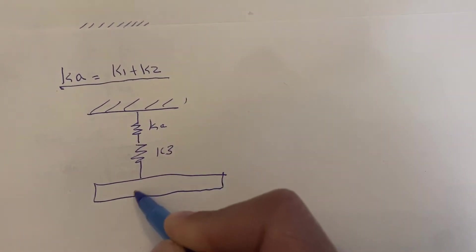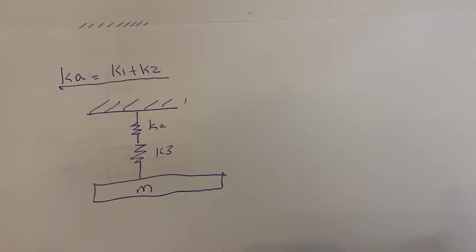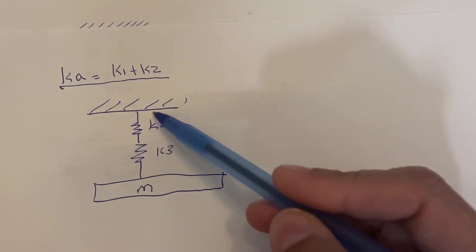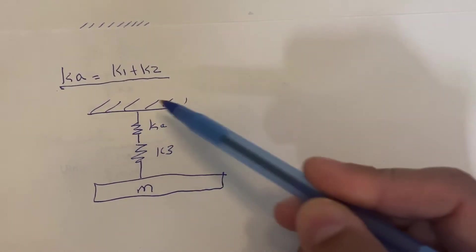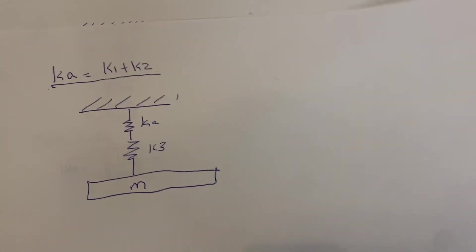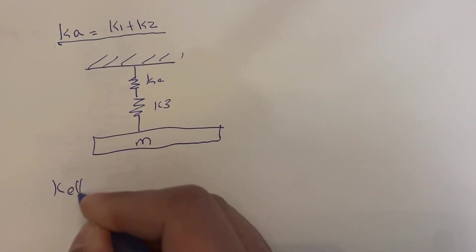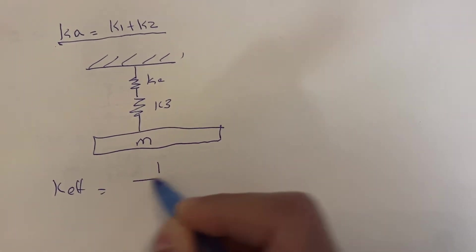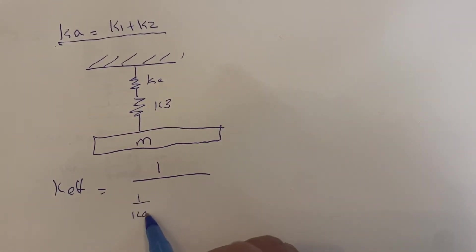Now, if you notice, the two springs are in series. The equation to find the equivalent stiffness for these two springs will be given by the following equation.